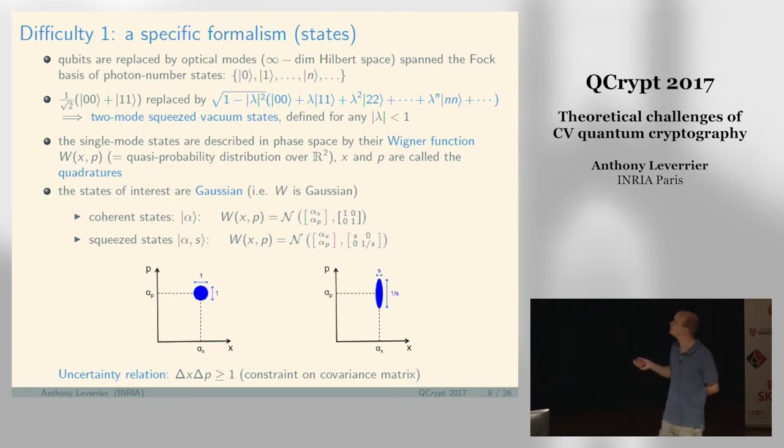In general it's not easy to describe the states in this Fock basis because you have an infinite number of parameters. A much more convenient way to represent the states is using their Wigner function.